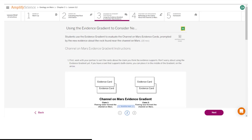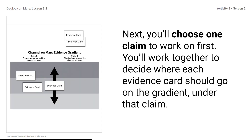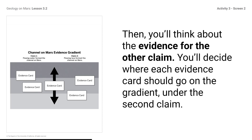Here is what your student screen looks like for this part of the lesson: Use the Evidence Gradient to Consider New Evidence. Next, you will choose one claim to work on first. You will work together to decide where each evidence card should go on the gradient under that claim. Remember that more convincing evidence goes near the top and less convincing evidence goes near the middle or the bottom. Then you will think about the evidence for the other claim and decide where each evidence card should go on the gradient under the second claim.